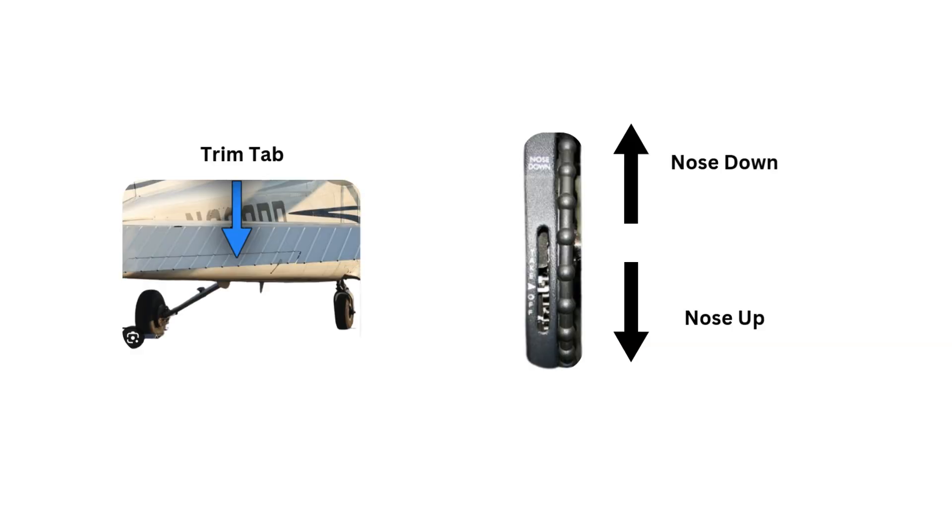Next, let's talk about trim tabs. The most common installation on small aircraft is a single trim tab attached to the trailing edge of the elevator. Most trim tabs are manually operated by a small vertically mounted control wheel as shown. Trim tabs help to reduce control pressures when flying.